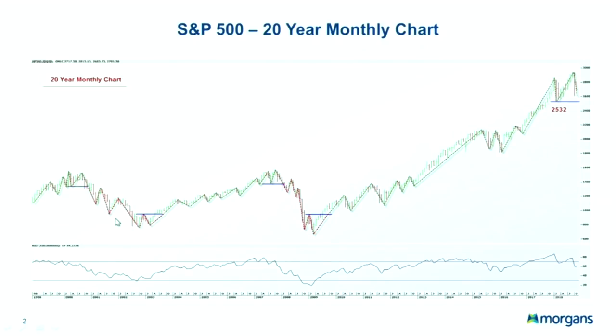One of the main assumptions in technical analysis is that price moves in trends. In an uptrend, price makes higher highs and higher lows, and in a downtrend, price makes lower lows and lower highs. In this chart I'm showing quite well all the up and down swings in uptrends and down swings in downtrends.